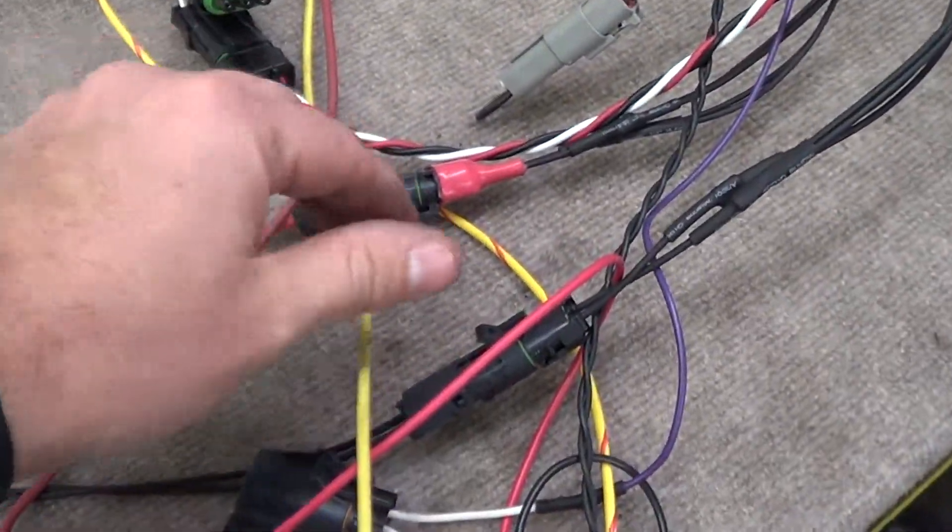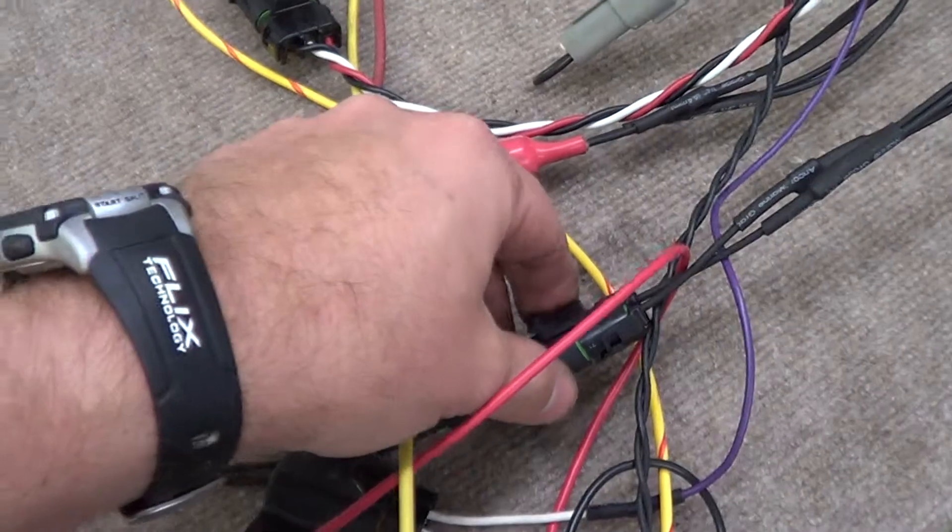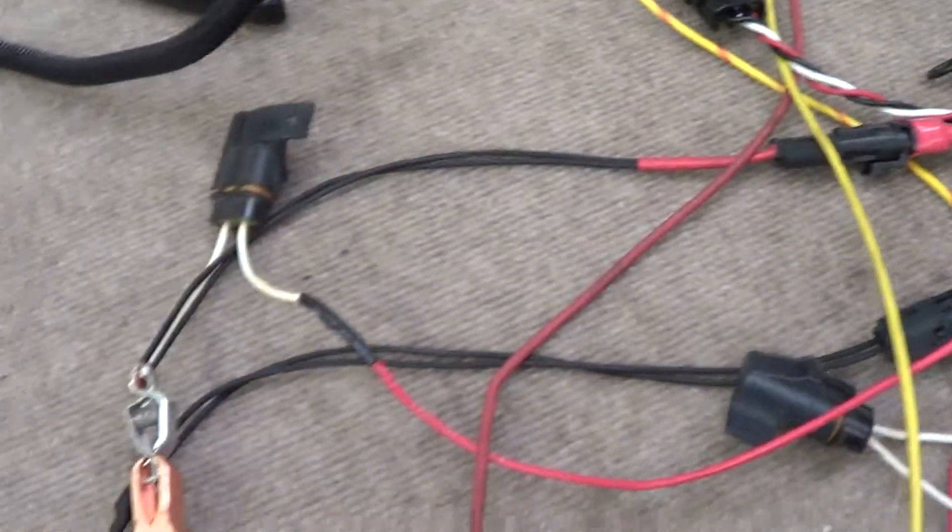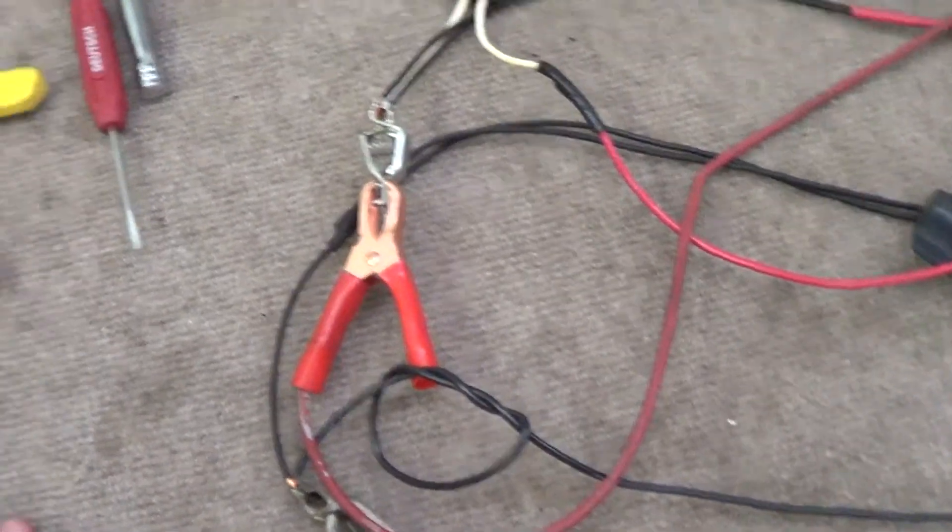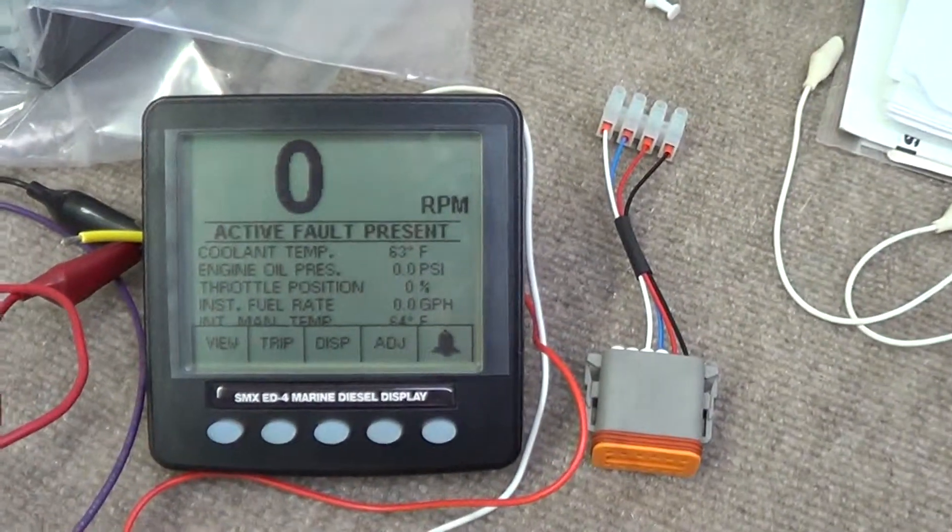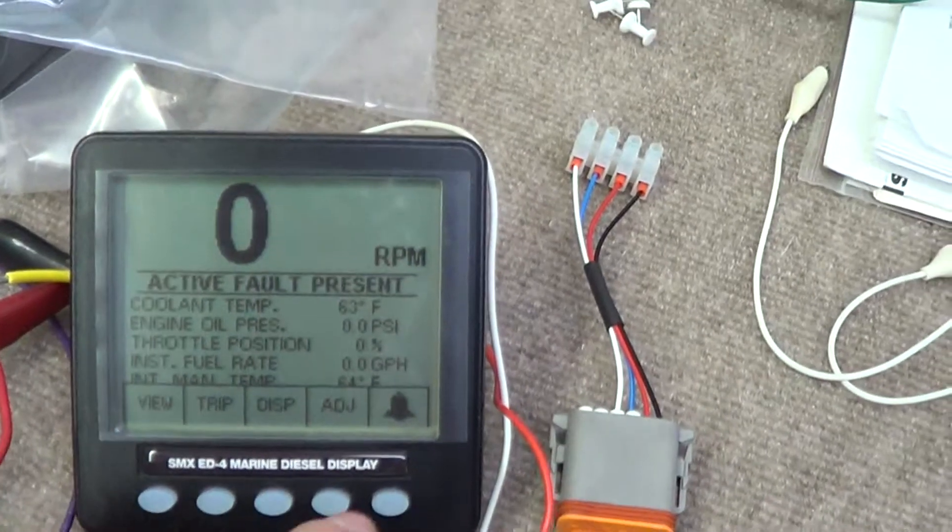Here's our power leads that come into the engine ECM here. Right now I just have them hooked up to the power supply, but you'll need to run those and put fused fuses on there. You can see here that our display is telling us that we have an alarm.